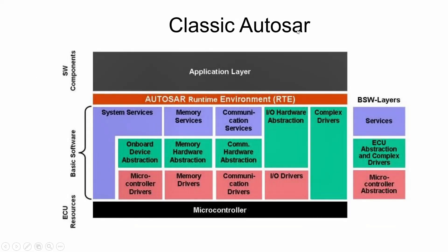First, let's look at Classic AutoSAR. The classic platform addresses requirements of deeply embedded electronic control units (ECUs) that control electrical output signals based on input signals and information from other ECUs connected to a vehicle network. Typically, you design and implement the control software for a specific type of vehicle which does not change during the lifetime of the vehicle, so there is no dynamic update possible in the classic platform. The classic platform uses a Virtual Functional Bus (VFB) to support hardware-independent development and usage of AutoSAR application software. In Classic AutoSAR there are three layers: the Application Layer, the RTE, and the Basic Software Layer.